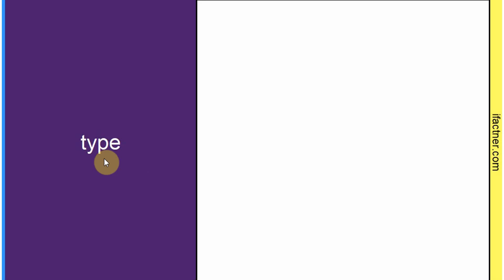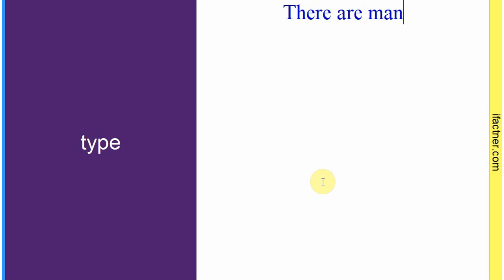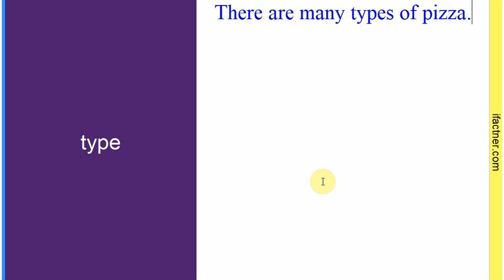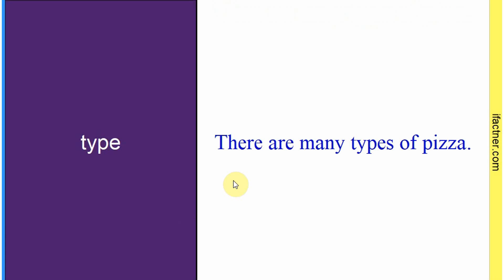Word hai: 'type'. Sentence banaate hain meaning samajhne ke liye: 'There are many types of pizza.' Pizza ki kaafi kismay hoti hain. Toh 'type' ka matlab hai 'kism'. Is ke alawa 'type' joh hum typing karte hain — type writer se, computer pe — usko bhi type karna kehte hain.